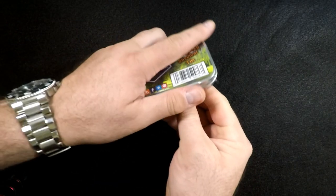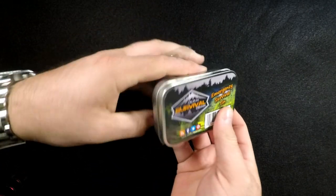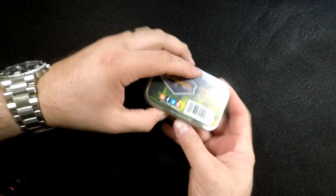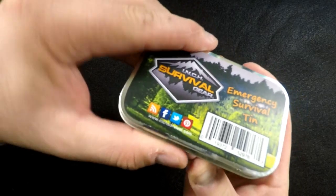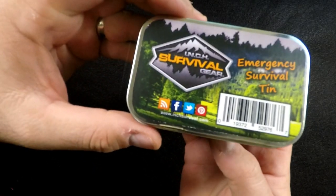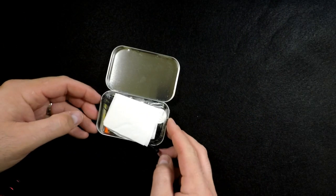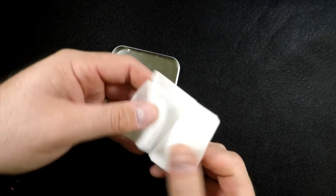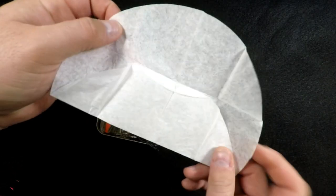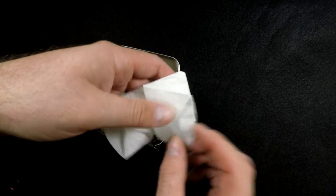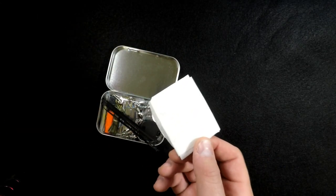So we're fixing to get into the tin. It's the size of any other tin. It does come wrapped in shrink wrap plastic, which is nice too, keeps it from opening up on accident. And we'll open it up and see what's in it here. Lots of little stuff. The first thing we're going to see in there is going to be a piece of tissue paper.